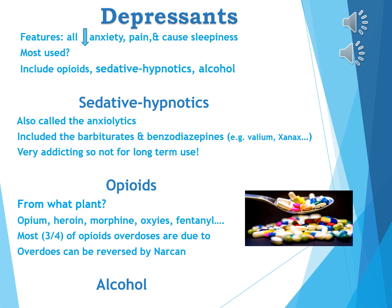Let's now consider the opioids, which come from the poppy plant. They include many drugs: opium, heroin, morphine, oxycodone, and fentanyl, amongst others. Most opioid addiction overdoses are due to fentanyl. Overdoses can be reversed if naloxone is present on site or reaches the person via ambulance quickly enough. Alcohol would be another major depressant drug, and we'll consider many of these in upcoming slides.